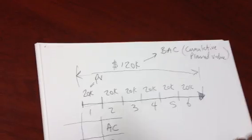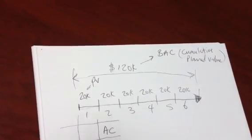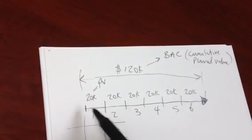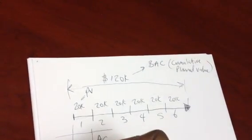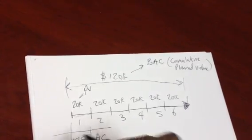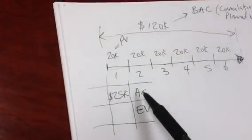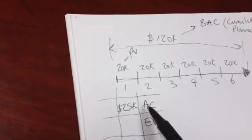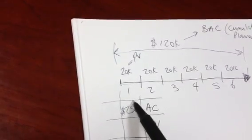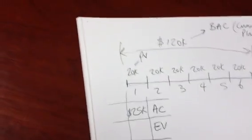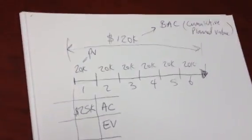So, actual cost is the actual cost of work that you spend for the work done. Let's say you got $20,000 worth of work done. However, because of one reason or the other, you ended up spending more. Let's say you spent $25,000. We call that the actual cost. So, take a look closely at these metrics. PV, planned value, $20,000. That's what you planned to get done within month one. Actual cost is the actual cost of work performed. How much did you spend to get that work done? In other words, you spent $25,000 to get $20,000 worth of work done.